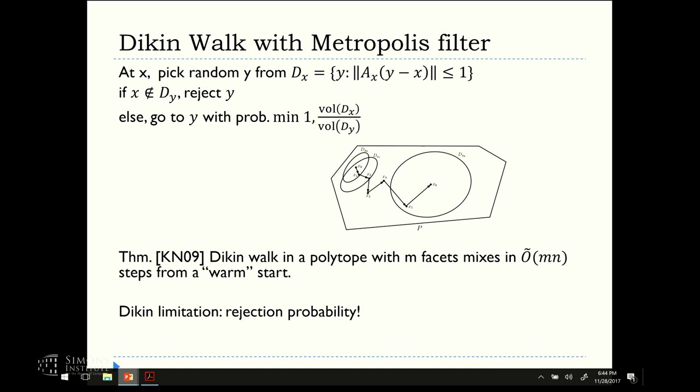Now, in place of the Dikin walk, where the ellipsoid is defined by what's called the logarithmic barrier, the Hessian of the logarithmic barrier, you could use other barriers. There's a whole theory of interior point methods. In some nice recent work, Chen, Duvidi, Wainwright, and Yu considered for example, the volumetric barrier by this interior point method, and it's still going to be quadratic for M equal to N, but they get for example, one of the results is square root M times N to the three halves.